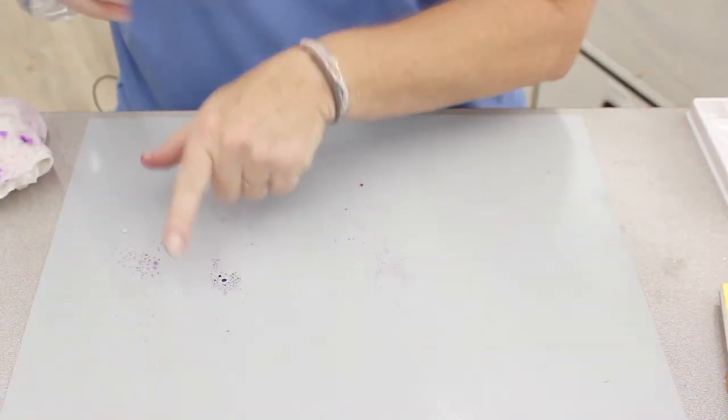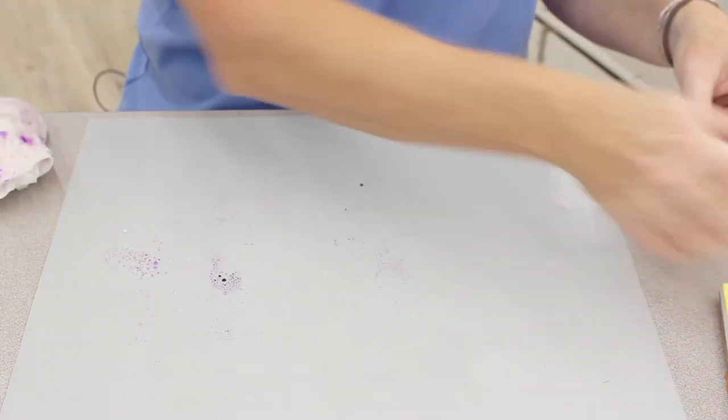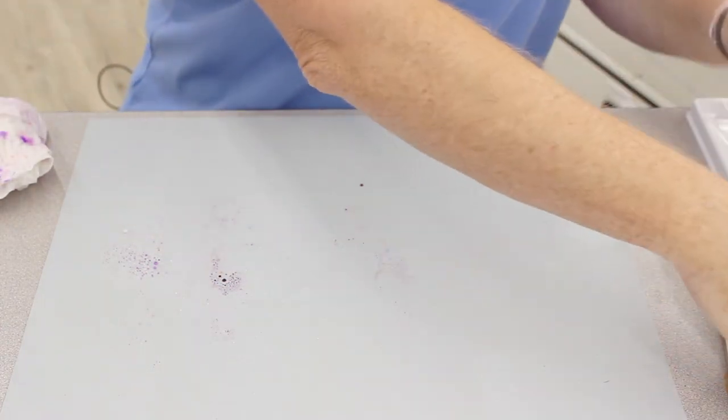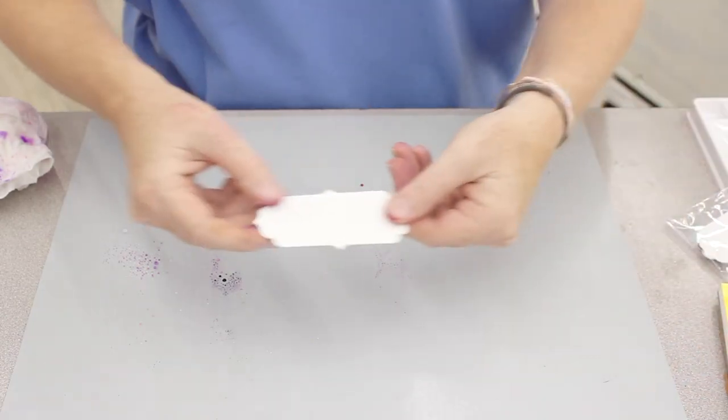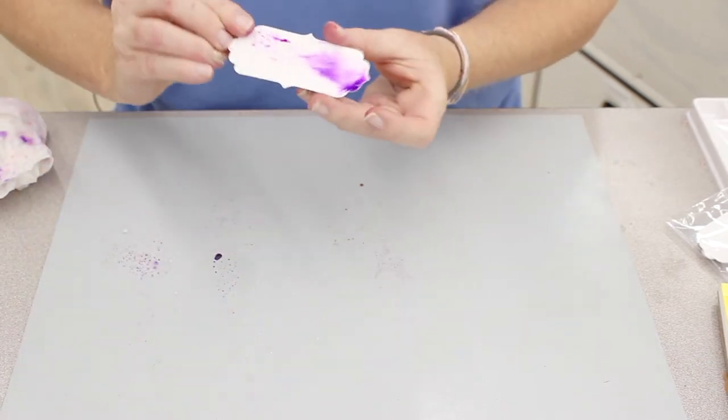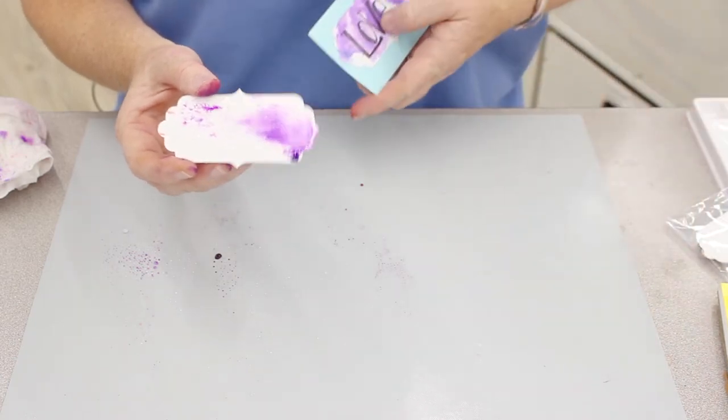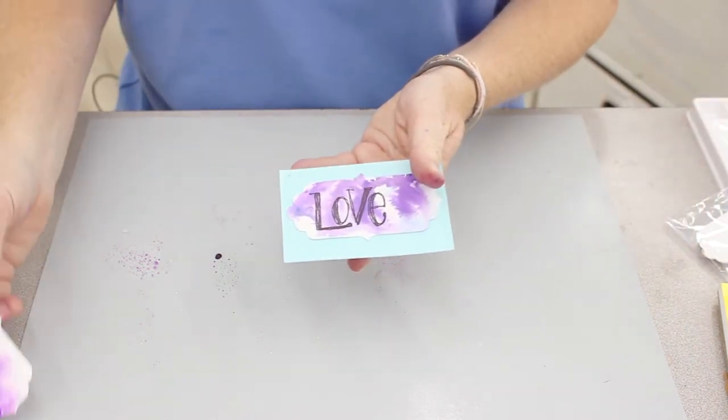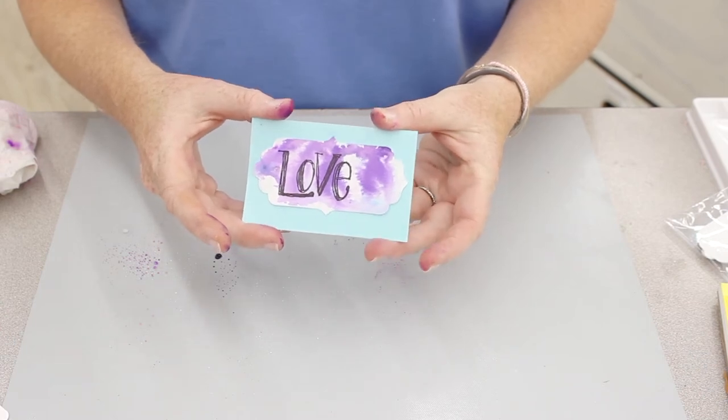Now when I spritz I'm seeing all this extra color left on my mat. Things that you can do with that. Ken Oliver also sells these tags and this is one of my favorite things to do. It's watercolor tags and I press and then I get a lovely background. Now with this once it dries you can also add your lettering to it and add it as a component for your card.